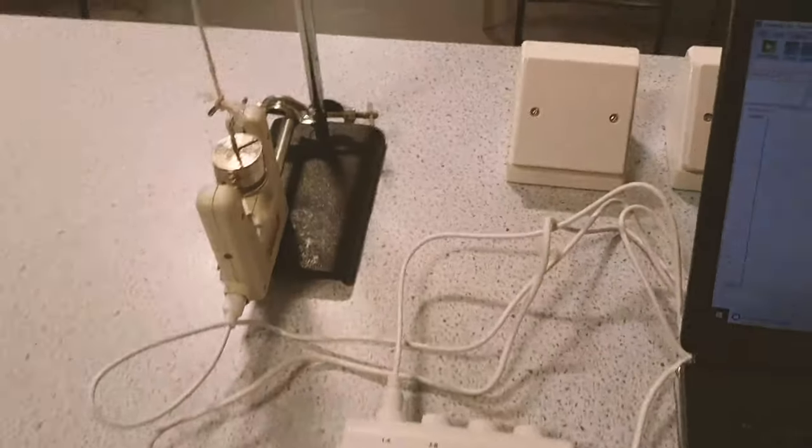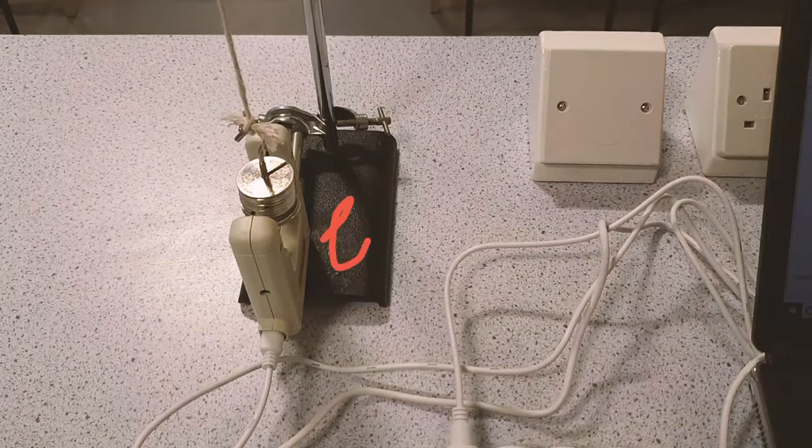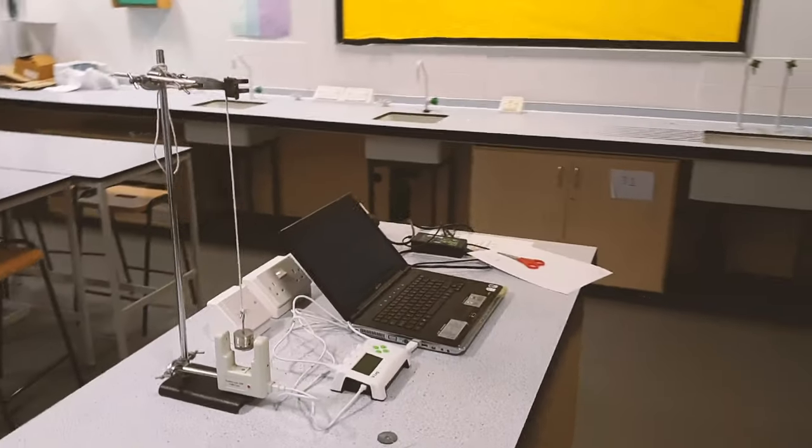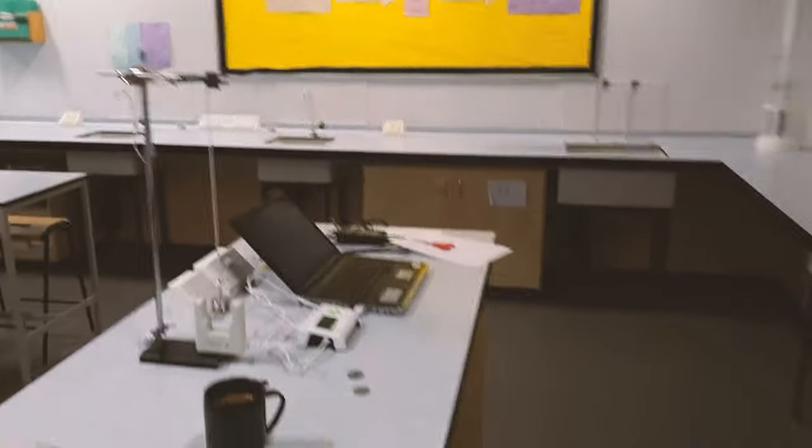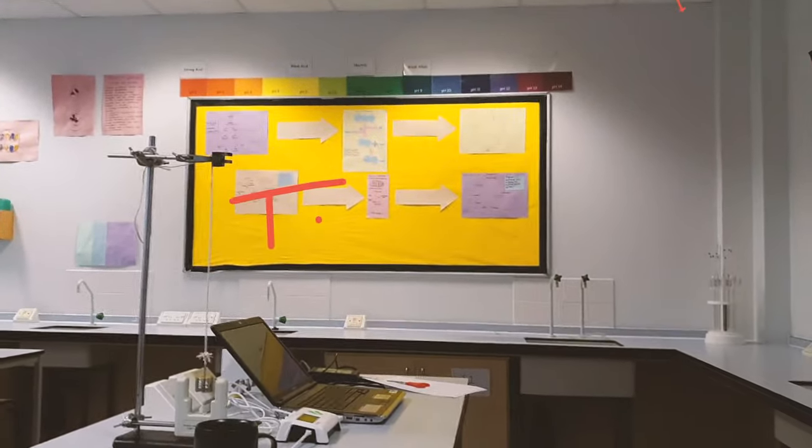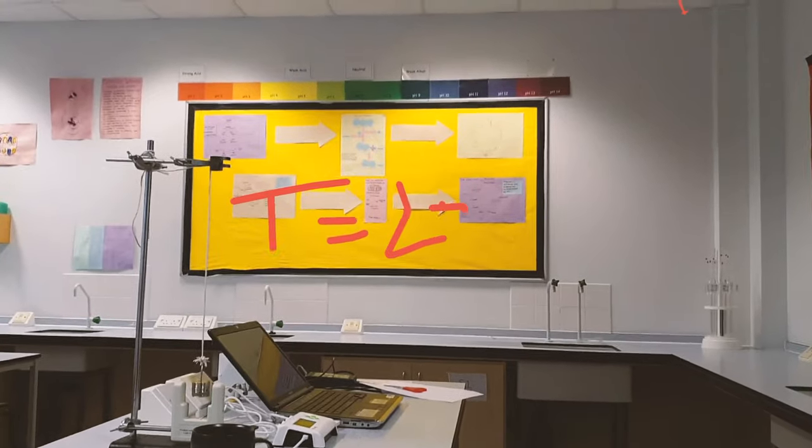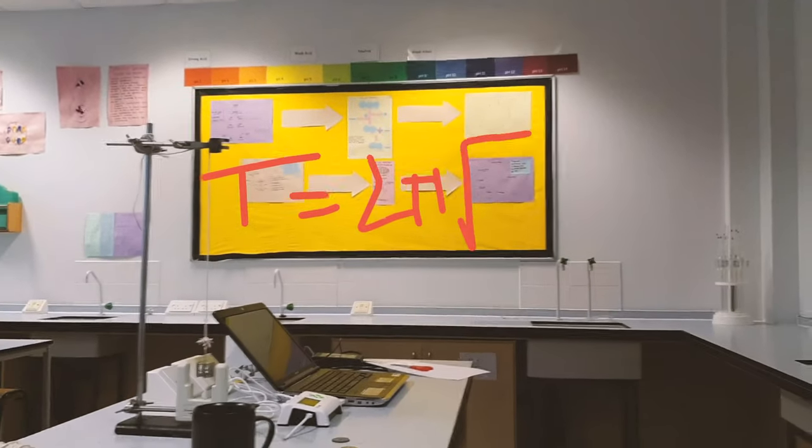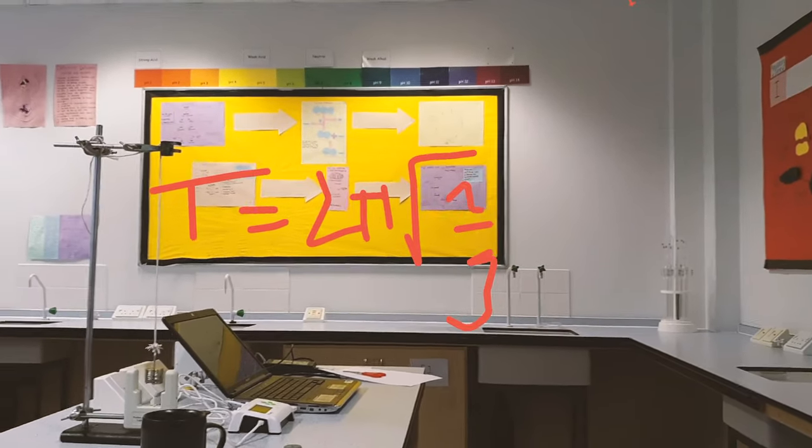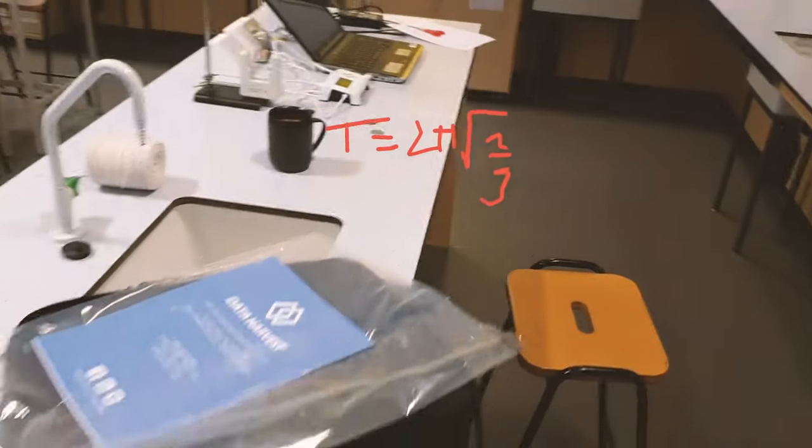So the length is the length of the string between the pivot point and the center of mass, and the time period is being measured on the computer by the EasySense software. The equation for a pendulum is time period is 2π√(L/g). So the only factor that's going to change in this case is the length. The only factor on Earth, if you like, that affects the time period of the pendulum is the length.